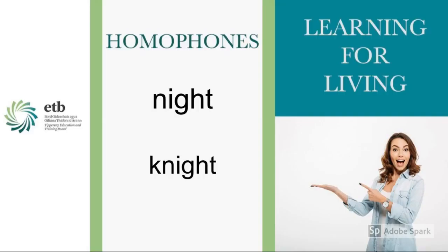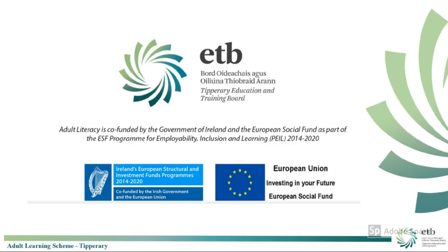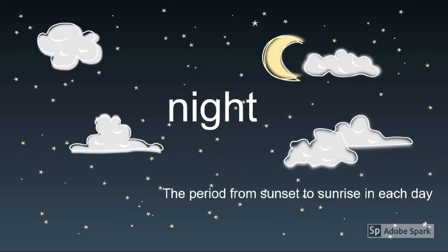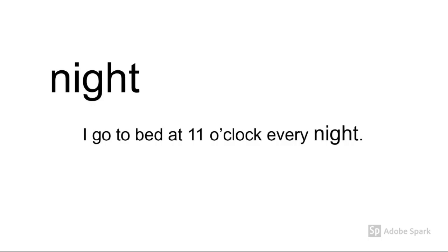In this lesson we will learn about the homophones night and knight. First we have night: N-I-G-H-T. This is the period from sunset to sunrise in each day. For example: I go to bed at 11 o'clock every night.